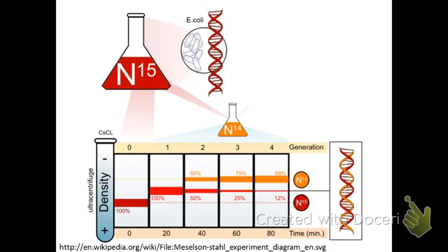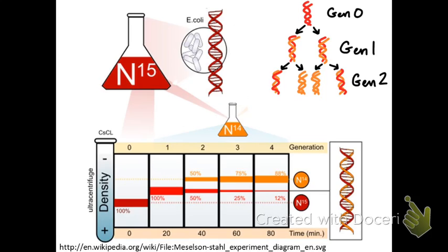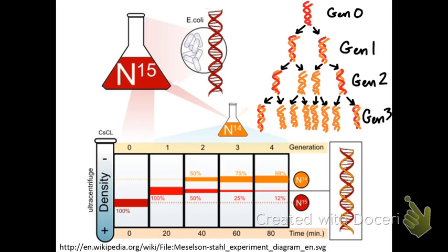So what was going on here? Well, the first generation had two heavy strands, generation zero. In the first generation that was grown in the N14 isotope, you had a mixture of heavy and a light strand that was replicated off of that template. In generation two, all four of those strands were used as templates for a new strand, so you ended up with two mixtures and two that were exclusively light. And then in generation three, a similar pattern, only you're adding in more of the exclusively light strains because those original two heavy strains are slowly being washed out or diluted as the generations progress in the lighter isotope food.